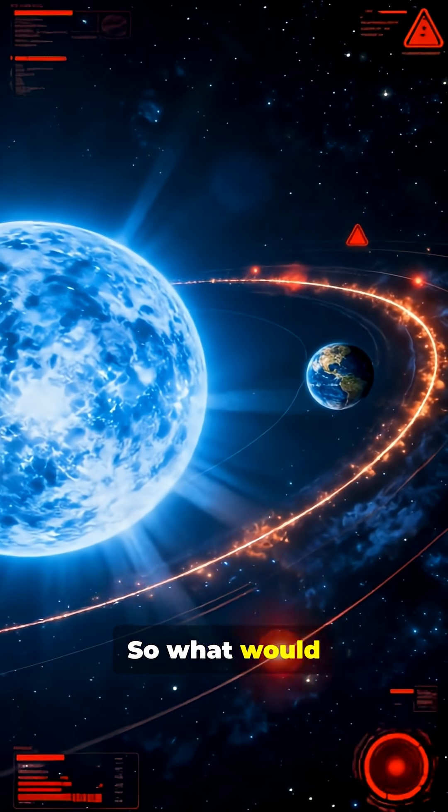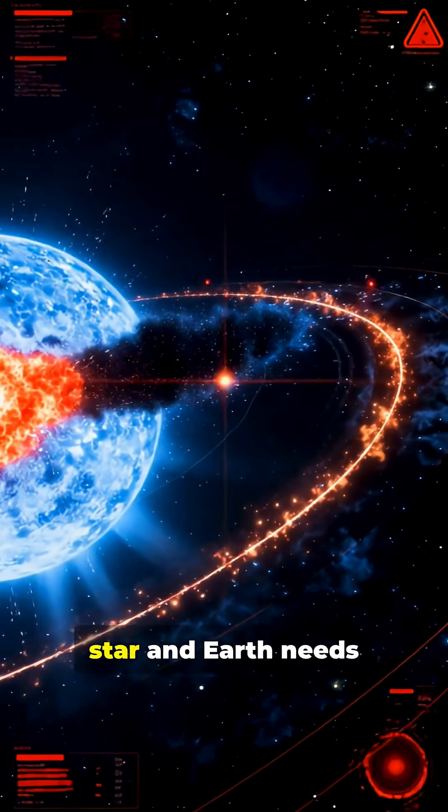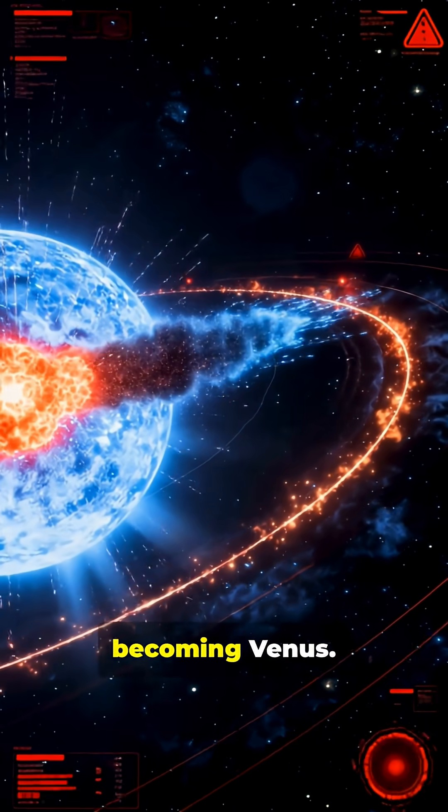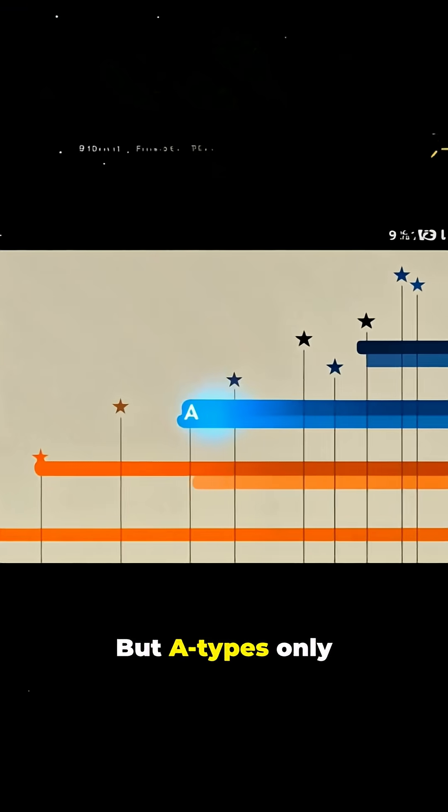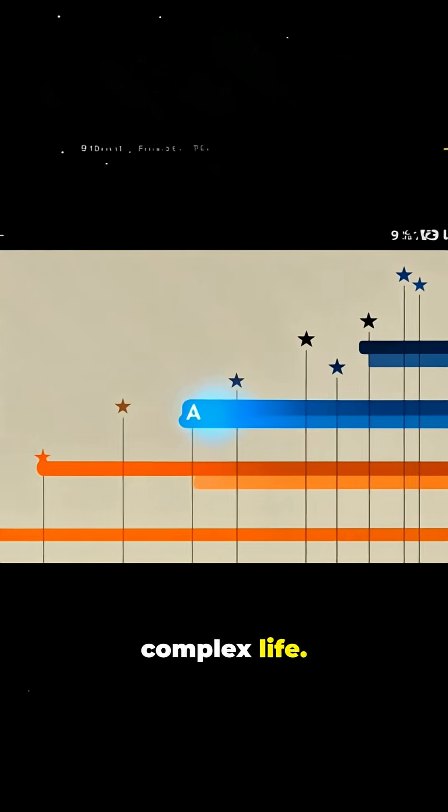So what would happen if we replaced it? Swap in an A-type star and Earth needs to orbit twice as far out to avoid becoming Venus. But A-types only live a few hundred million years, not enough time for complex life.